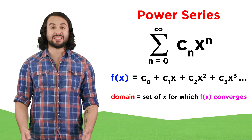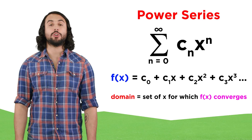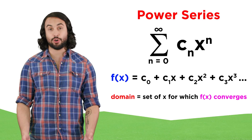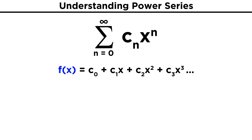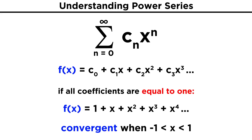Now let's look at some specific examples and see what we can determine regarding convergence and divergence. If we take this general form and make all the coefficients equal to one, that would give us a geometric series, which will be convergent when x is between negative one and one.